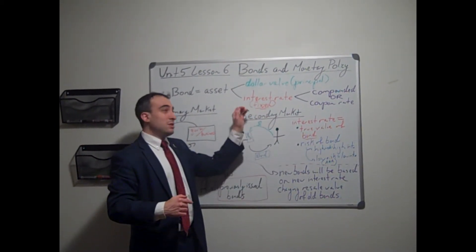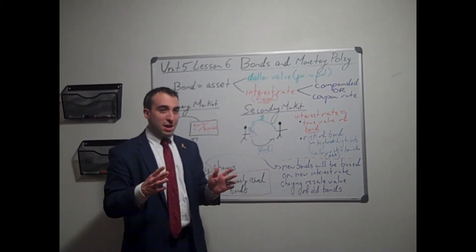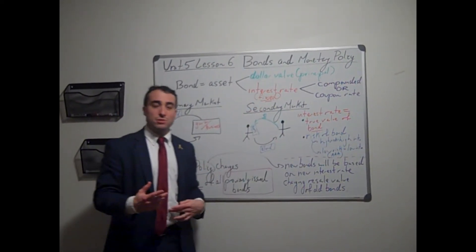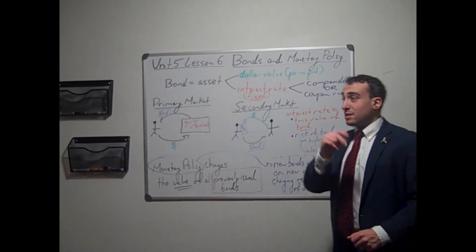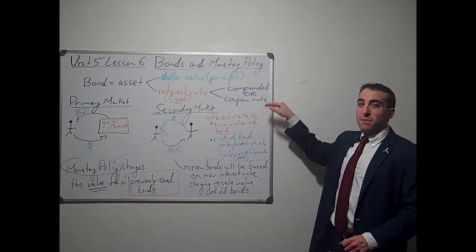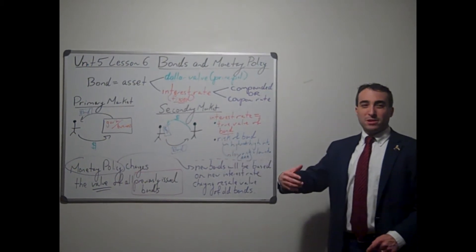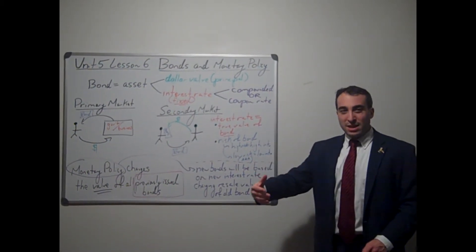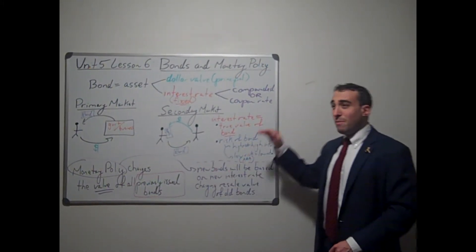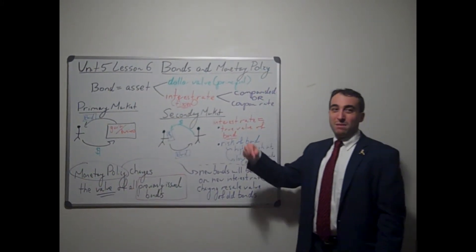It's really important to note — and especially for the AP test — always assume that the bond, as most bonds are, has a fixed interest rate. This interest rate can be one of two things. It can be a yearly compounded interest rate, so if you have a bond for $100 at 5%, the first year it is $105, and then the next year it is 5% of $105. Compounding means the interest keeps adding on top of the new value created by the interest.